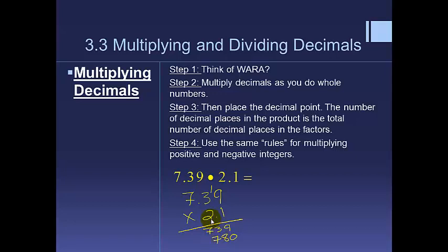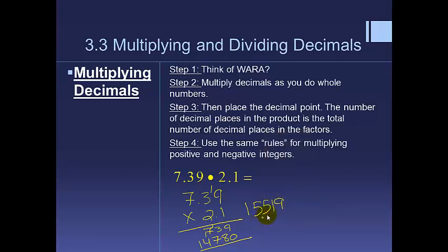Continuing: 2 times 7 is 14. Adding up the columns: 9 plus 0 is 9, 8 plus 3 is 11 — carry the 1 — giving 5 and then 1. Now if I left it without a decimal, that's not reasonable. Placing it to get 1,551 is also not reasonable since our goal was around 14. The reasonable place puts the decimal here. Counting decimal places in the factors: one, two, three — so we move one, two, three places in the answer.